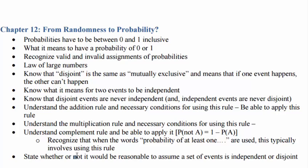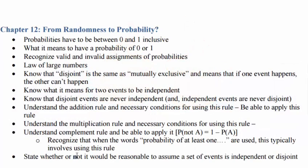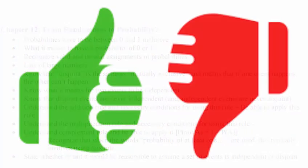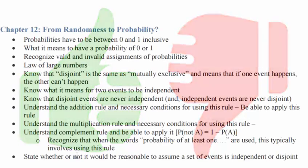Another example: can you make an A in stats class and an A in English class? Yes — so those are not disjoint events. But can you make an A and a B in the same stats class? No — those are disjoint events. You can only make one grade in a class; as soon as someone tells you they made an A, you know they did not make a B.